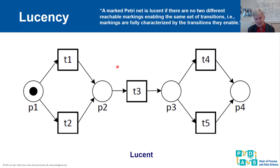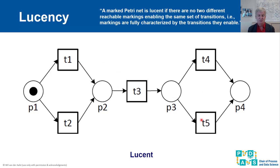There are four possible states, and in every state the set of enabled transitions is different. If there is a token in P1, T1 and T2 are enabled. If there is a token in P2, T3 is enabled. If there is a token in P3, P4 and P5 are enabled. If there is a token in P4, no transitions are enabled. So for each reachable marking we have a unique characterization in terms of the set of enabled transitions.